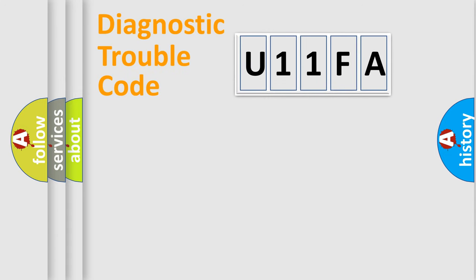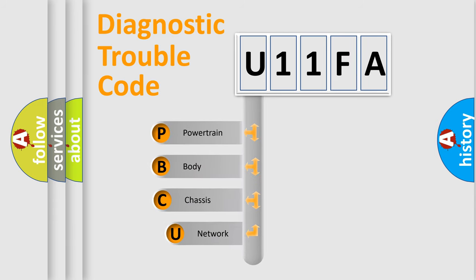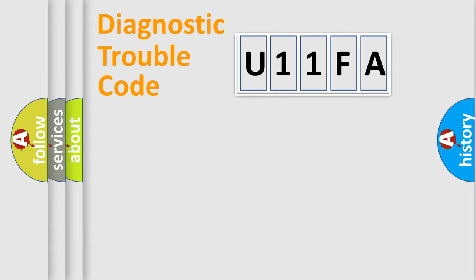Let's start by looking at the history of diagnostic fault code composition according to the OBD2 protocol, which is unified for all automakers since 2000. We divide the electric system of an automobile into four basic units: Powertrain, Body, Chassis, and Network. This distribution is defined in the first character of the code.